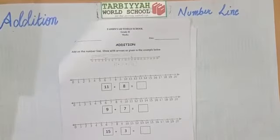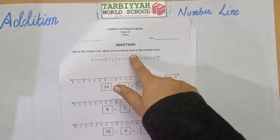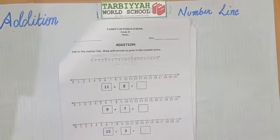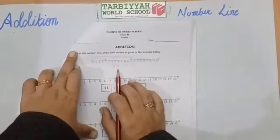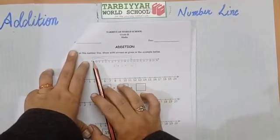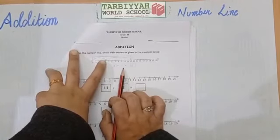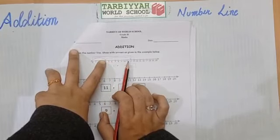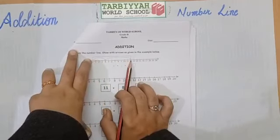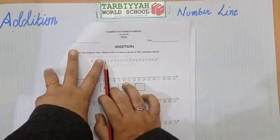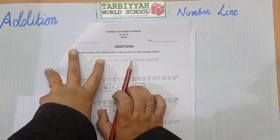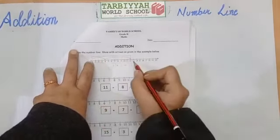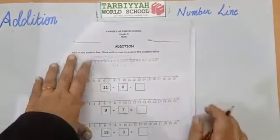Now we will solve the worksheet on additions. Add on the number line — show with arrows as given in the example below. So what we have to do? We have to show with arrows. In this example, 4 plus 8 equals 12. We have to start from 0 to 4, then move forward 8 numbers: 1, 2, 3, 4, 5, 6, 7, 8. We have to move forward from number 4 by 8 steps. The total is 12. So the answer is 12.